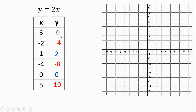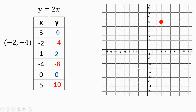Now what we're going to do is take these inputs and outputs and graph them on the coordinate plane. Our first ordered pair — input of 3, output of 6 — we're going to think of that as (3, 6). X value is 3, y value is 6, so (3, 6) is going to be right about there on the graph. Then we have negative 2, negative 4 — that means left 2, down 4 — it's going to be over in quadrant 3. Then 1, 2 is going to be in quadrant 1. A lot of times kids will think of it as (2, 1), but you've got to be real careful — the x value is 1, y value is 2. That's how it's going to line up.